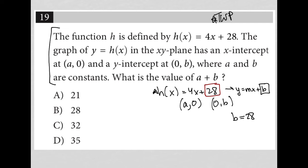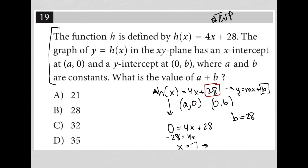The x-intercept is where we set y equal to 0. So all I need to do is set h of x equal to 0 and solve for x. I'd have 0 equals 4x plus 28. I can then subtract 28 from both sides, leaving me with negative 28 equals 4x. I can then divide both sides by 4, leaving me with x equals negative 7.